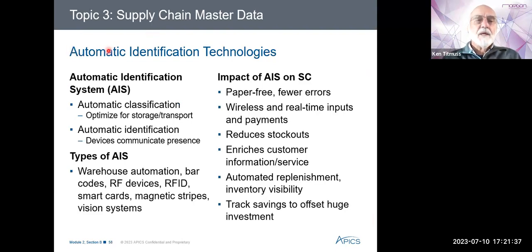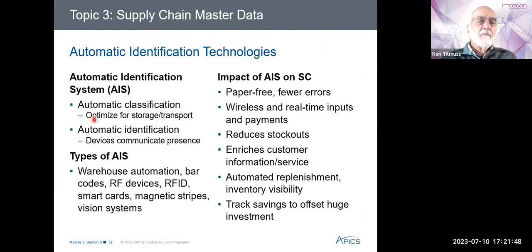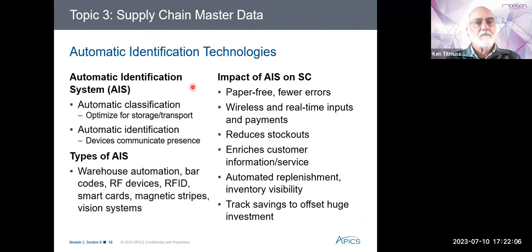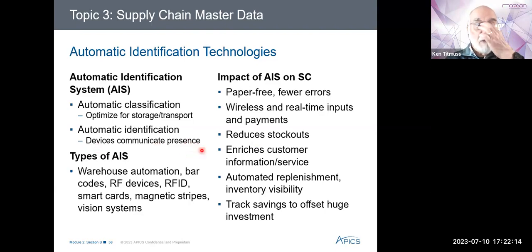Automatic Identification Technologies — we have Automatic Identification Systems (AIS) and Automatic Classification, optimized for storage and transport. Once we've identified an item, a warehouse management system will optimize the storage and tell you where to put it, or a transport management system will tell you which truck to put it on. Automatic identification devices communicate what's actually happening at that particular moment in time.